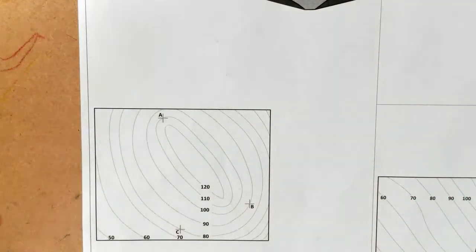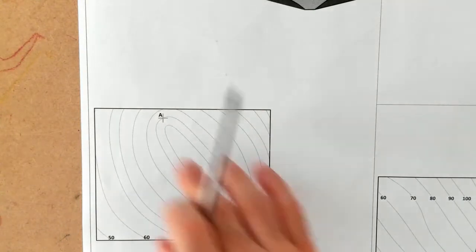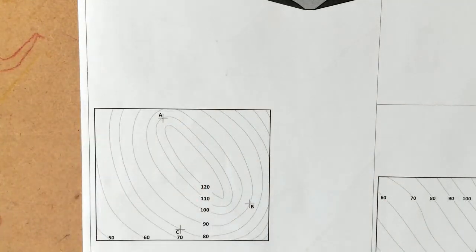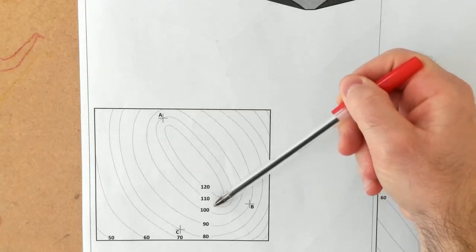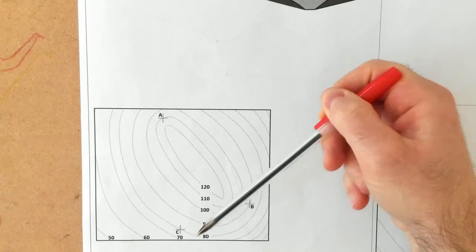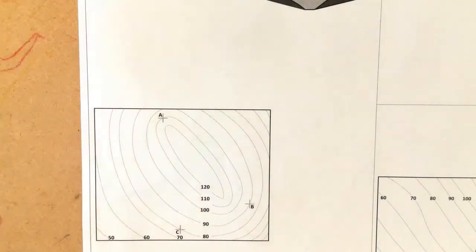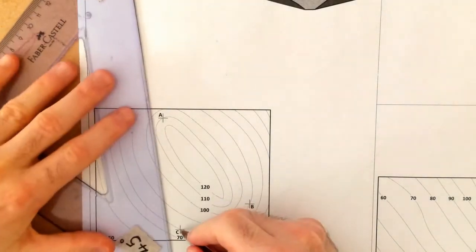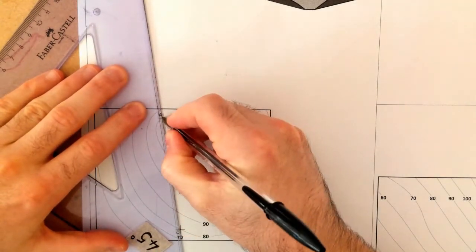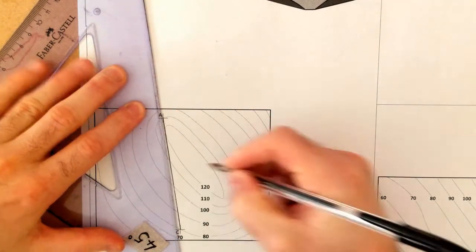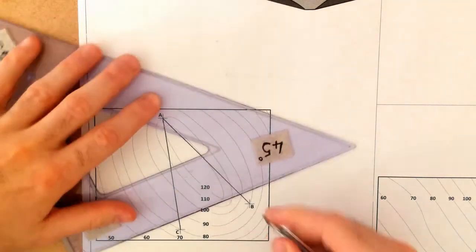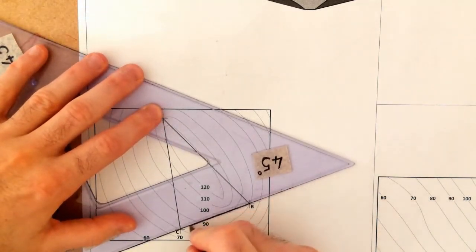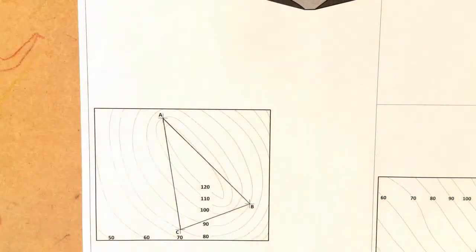We have a plan view showing the outcrop points of that stratum of ore. We can see point A is on the 110 contour, B is on the 90, and C is on the 70. What I need to do is join the three of them up — join A to B, B to C, and C back to A. I've got my plan view, but we also need to find the elevation.